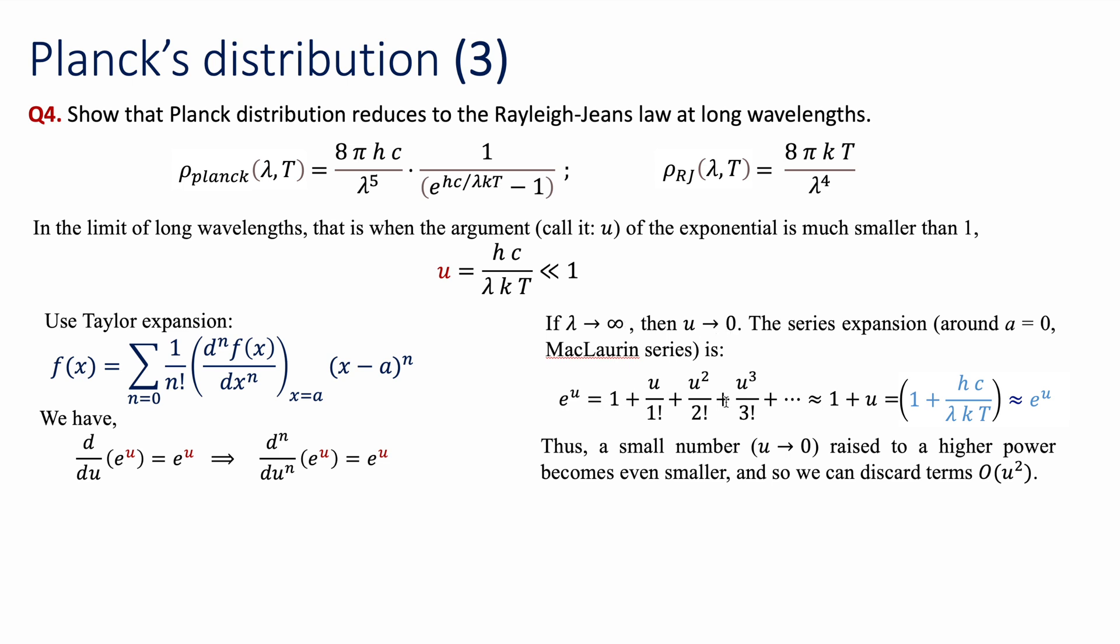And if we have this expansion here, all these terms, since u is almost 0, u squared is going to be a smaller number, u cubed is going to be even a smaller number, and so on. All the terms higher than order 2 are going to be much smaller than the first term that I have in my expansion, u.